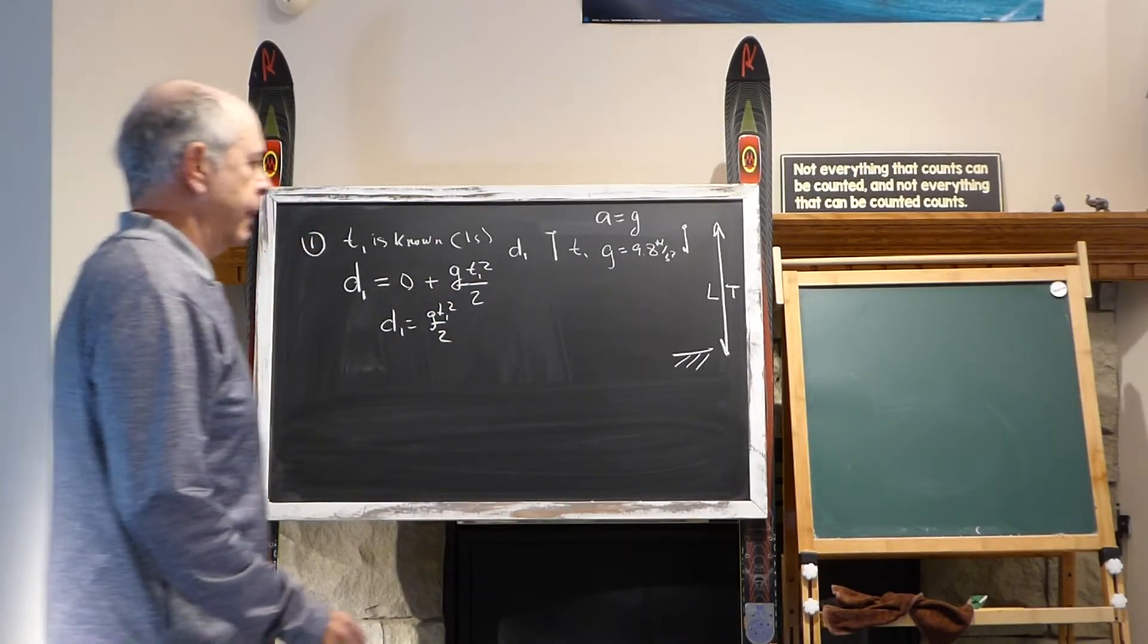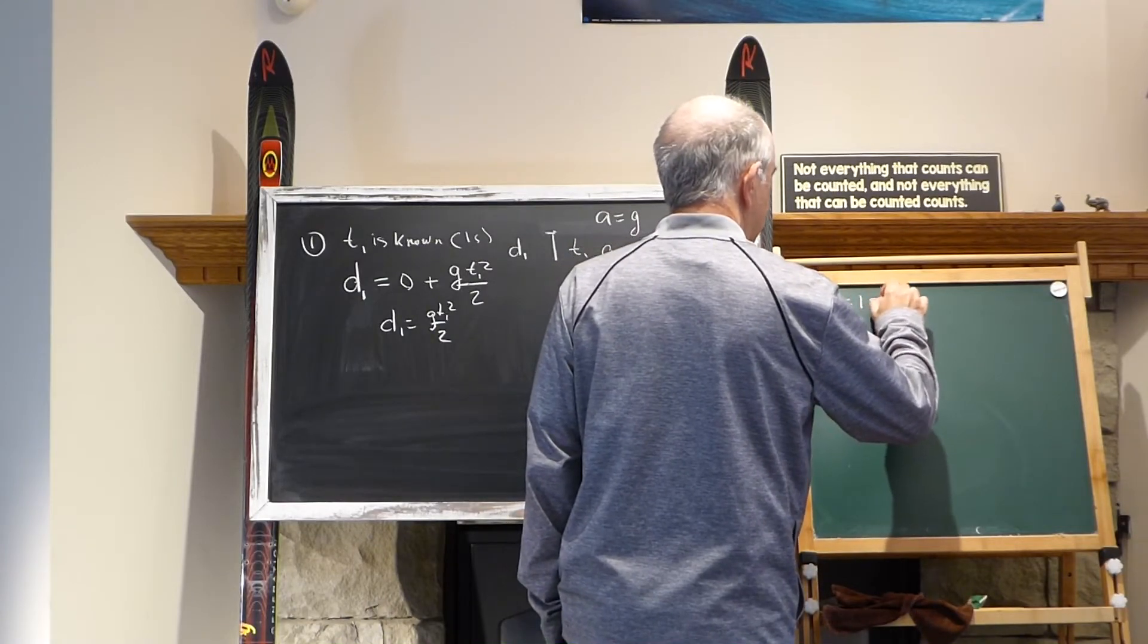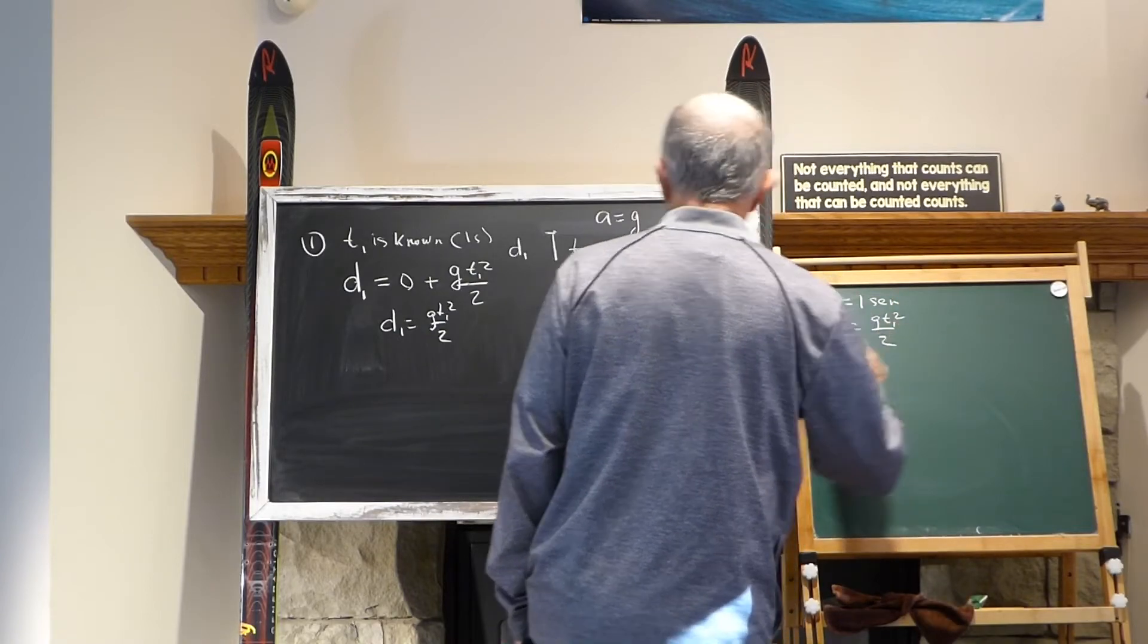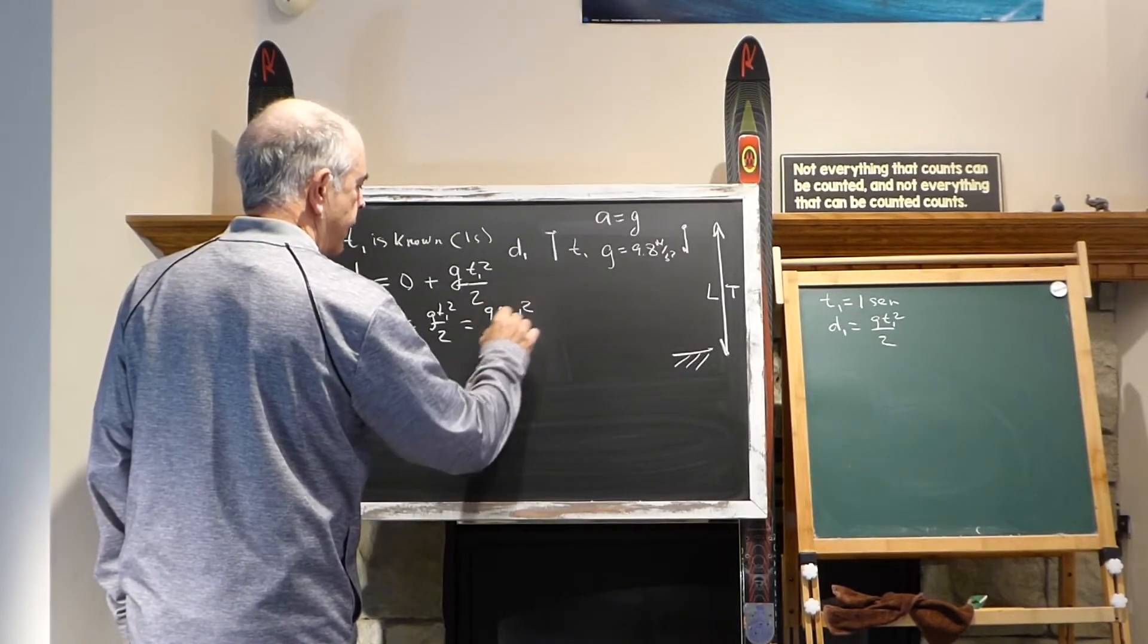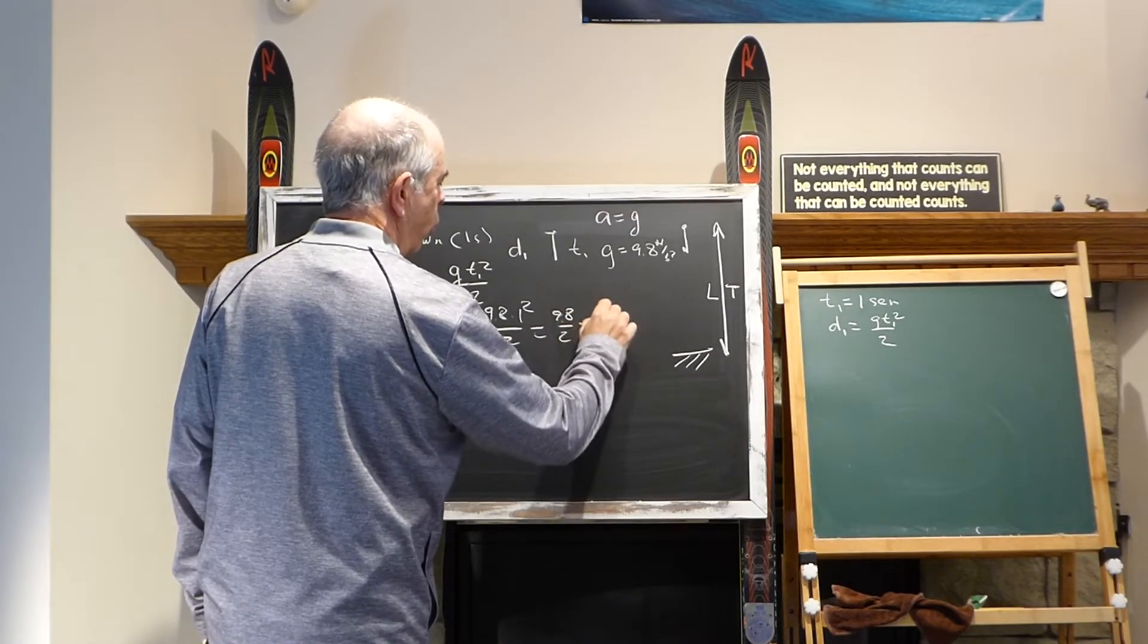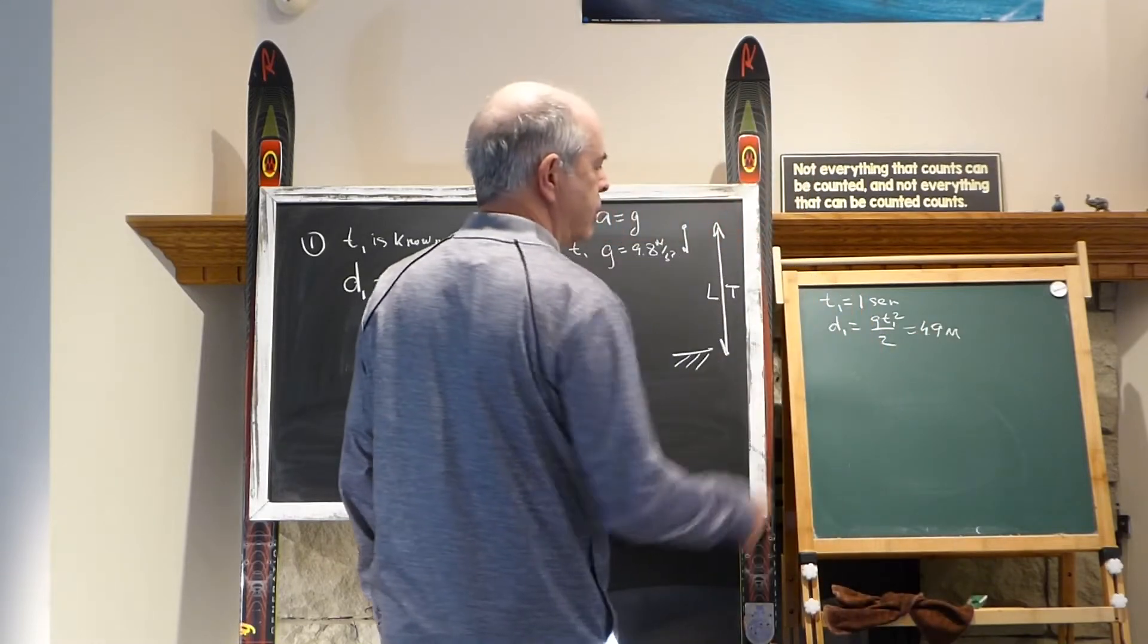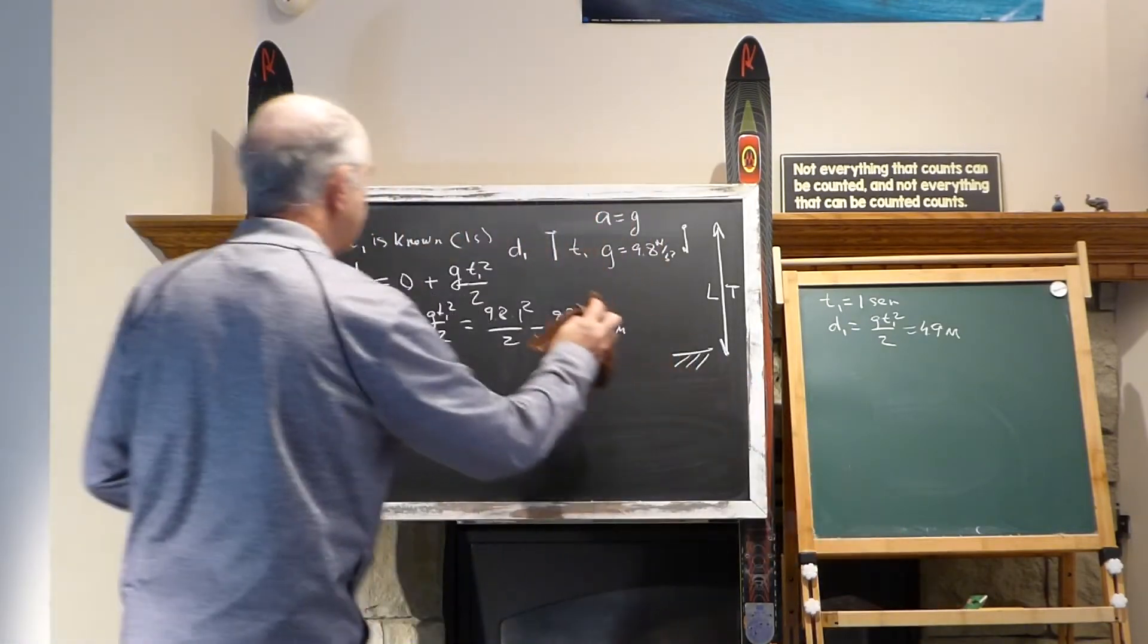We can put the numbers, we can write it here, that T1 equals 1 second, and D1 equals G*T1² over 2. We put the numbers, G is 9.8, T is 1 squared over 2, 9.8 over 2, we have 4.9 meters. And this is the result, we have 4.9 meters. It's the first second. Okay? That's very good.